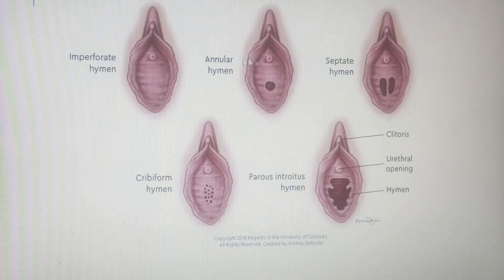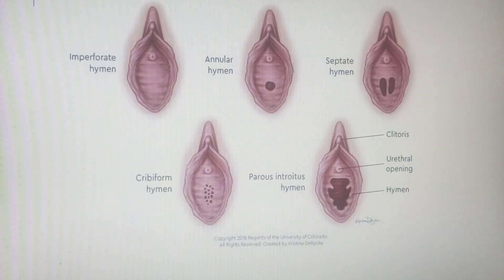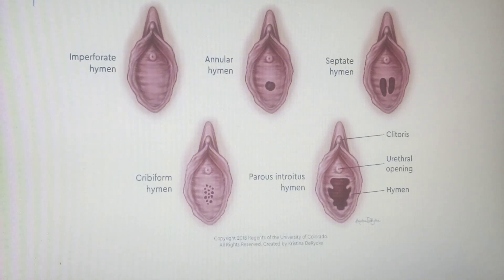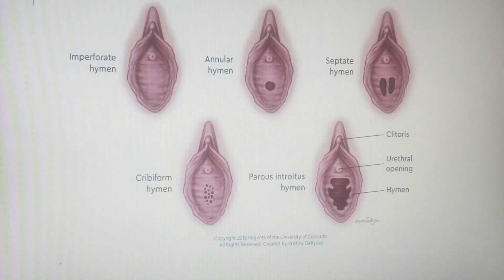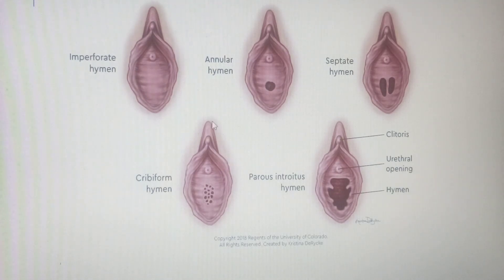In summary, the structures of the vulva or external female genitalia that we have seen include: the mons pubis, labia majora, labia minora, clitoris, greater vestibular gland, vestibule, and hymen — these all represent what we call the external genitalia.